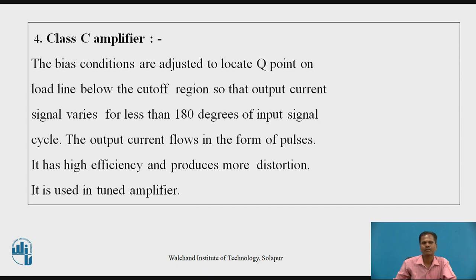The fourth type of power amplifier is the Class C power amplifier. The power transistor bias conditions are adjusted to locate the Q point on the load line below the cut-off region so that the output current signal varies for less than 180 degrees of the input signal cycle. The output current flows in the form of pulses. It has high efficiency and produces more distortion. It is used in tuned amplifiers. Since the power transistor conducts for less than 180 degrees of the input signal cycle, the efficiency of the Class C amplifier is relatively higher.